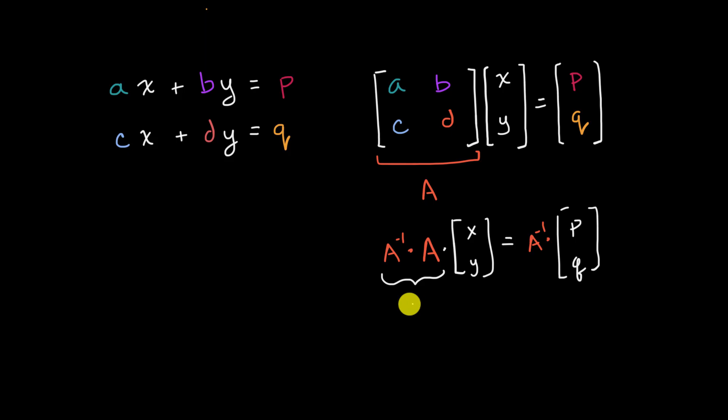then this right over here is just going to become the identity matrix. So that's just the matrix that if I try to transform anything, or if I multiply anything by it, it's just going to give us that thing that we had before. In the two by two scenario, the identity matrix, it looks like that.